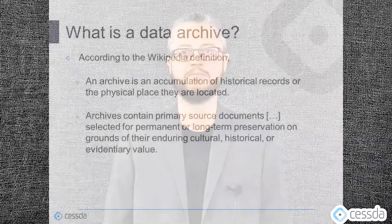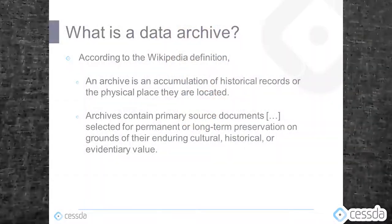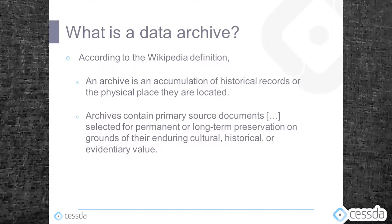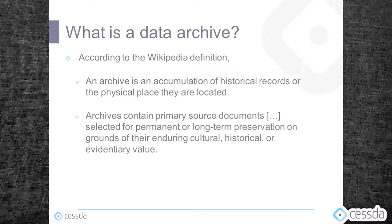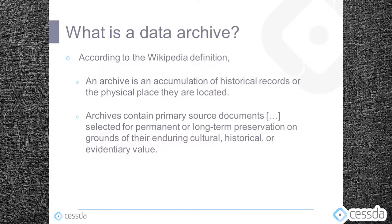What is a data archive? According to the Wikipedia definition, an archive is an accumulation of historical records or the physical place they are located. Archives contain primary source documents selected for permanent or long-term preservation on grounds of their enduring cultural, historical or evidentiary value. In a data archive the source documents are research data, and nowadays they typically come in a digital format.